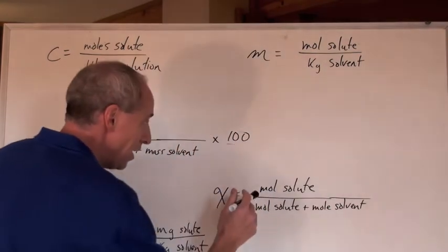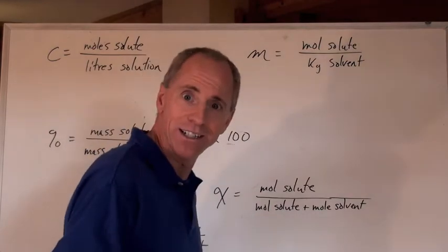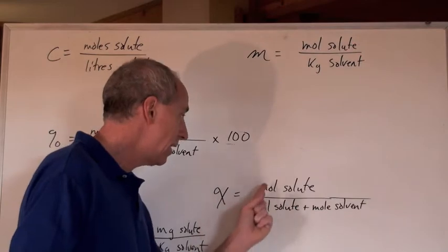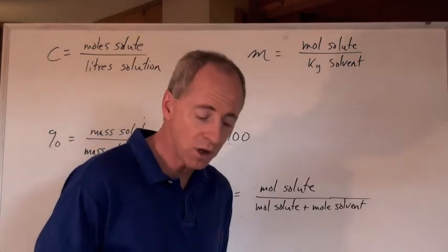But you have to find moles. The chi, that's the Greek letter there, or the mole fraction, equals the moles of solute divided by the moles of solute plus the moles of solvent.